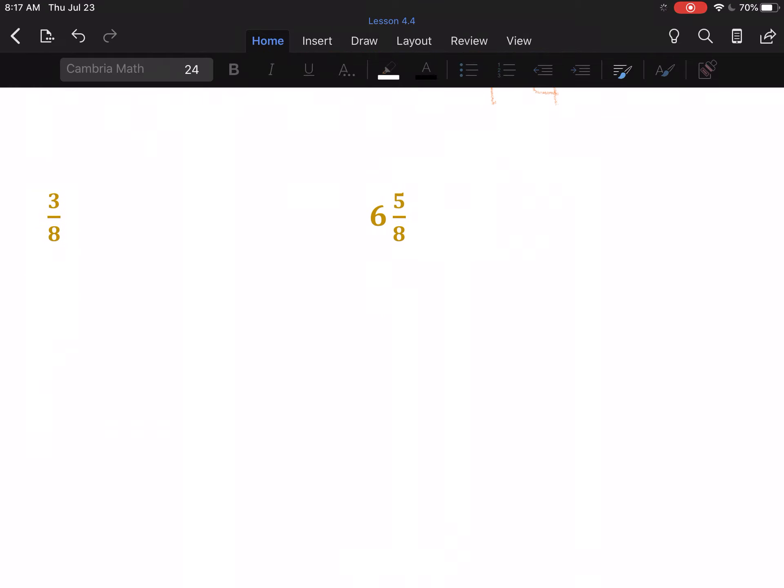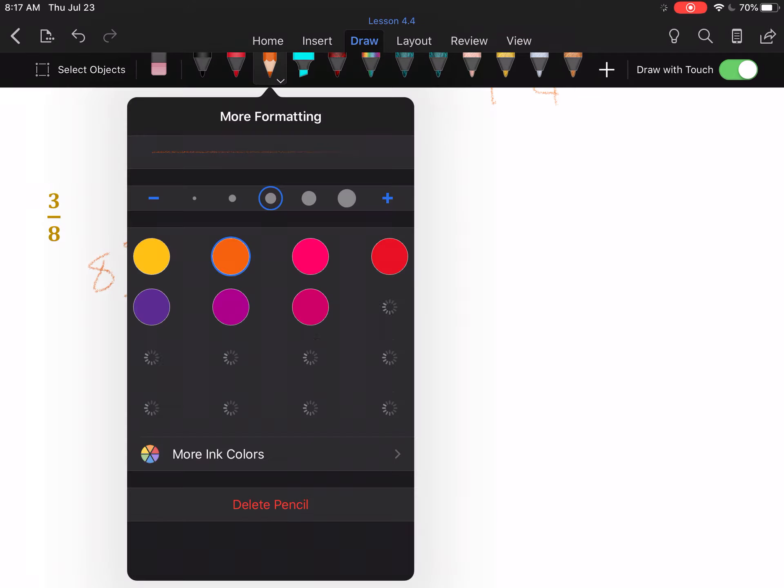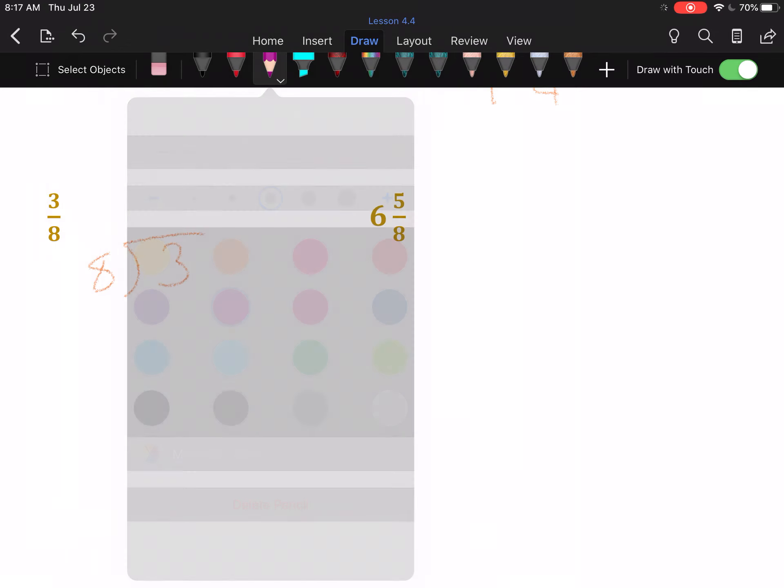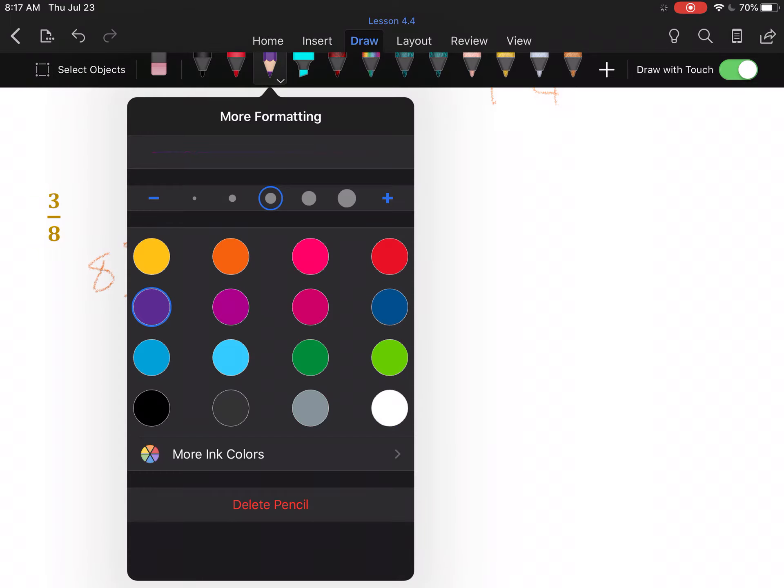To change a fraction into a decimal, it's just division, like I introduced in the last section. Three-eighths is three divided by eight. Now, we're not going to do this with remainders. We're going to put in a decimal point and add zeros—I'm going to add three zeros because I know that's how many we'll need.